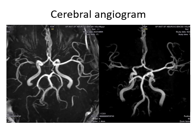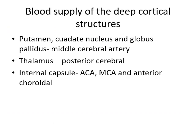Here is an angiogram showing the cerebral circulation and its branches — this is a normal one. To summarize the blood supply of the deep cortical structures: the putamen, caudate nucleus, and globus pallidus are supplied from the middle cerebral artery; the thalamus by the posterior cerebral artery; and the internal capsule by the anterior cerebral, middle cerebral, and anterior choroidal arteries. The internal capsule blood supply is very important because lots of infarcts can happen here, and because many nerve fiber tracts run through the internal capsule, reduction in blood supply at that site will cause many clinical symptoms.